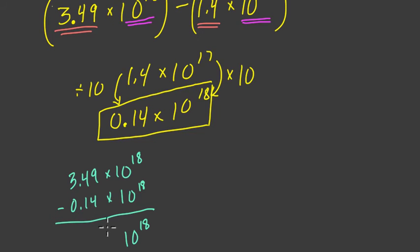So I'll show that, and then I'll explain that a little bit more. So 3.49 minus 0.14. 9 minus 4 is 5, 4 minus 1 is 3, and 3 minus 0, of course, is 3. And that's our answer. In E notation, we can write 3.35E18.